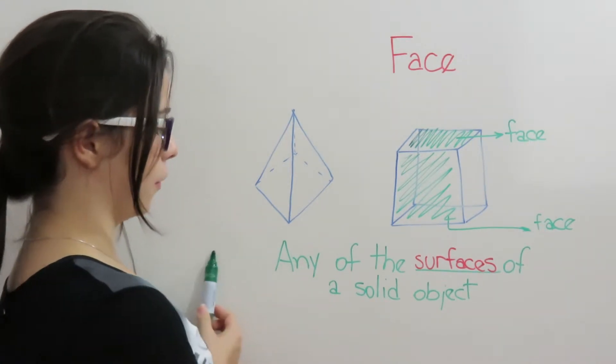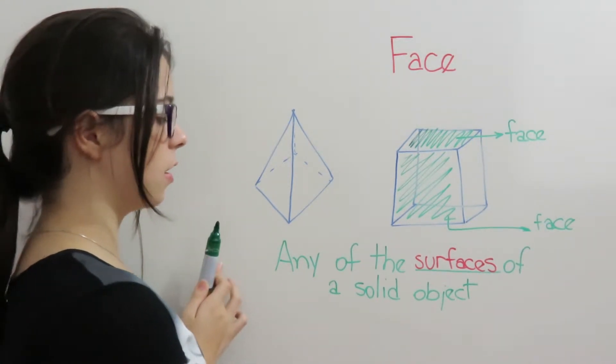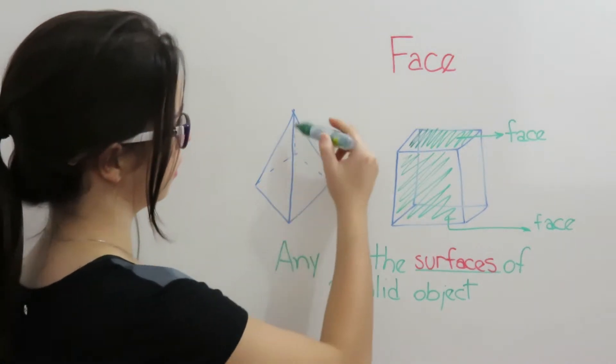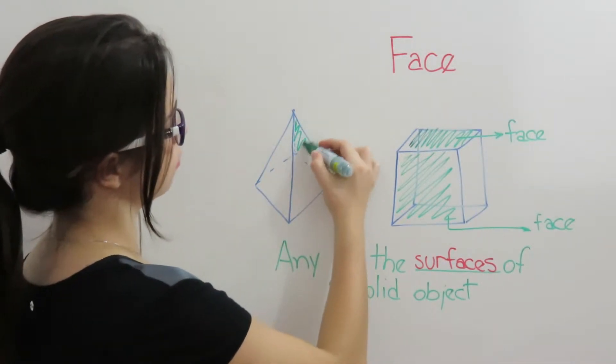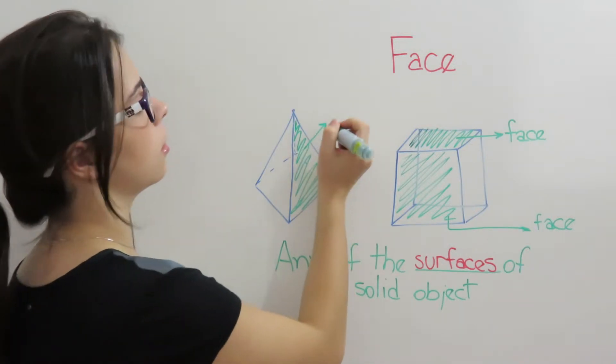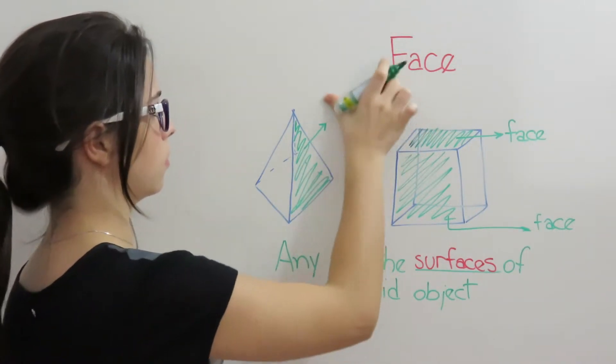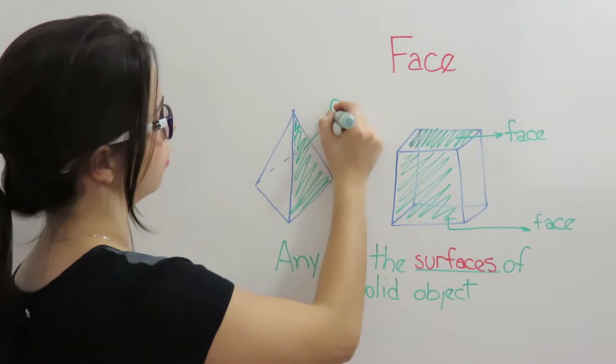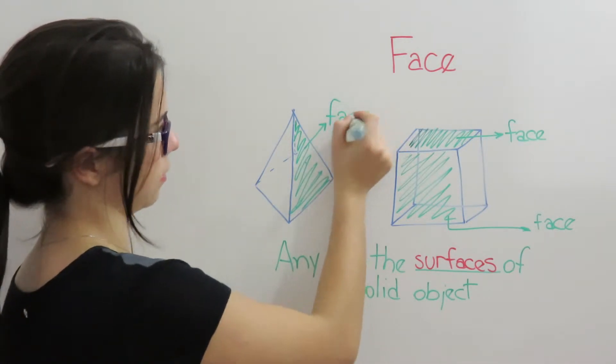And this other example, any of the surfaces of a solid object. So, this is one surface of the object, the solid. And it is called face. It is one face of the object.